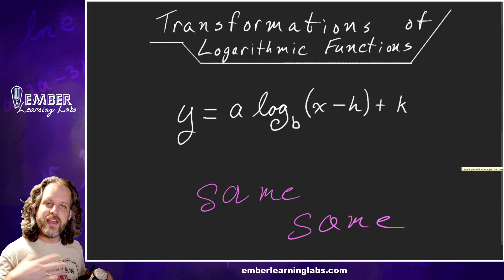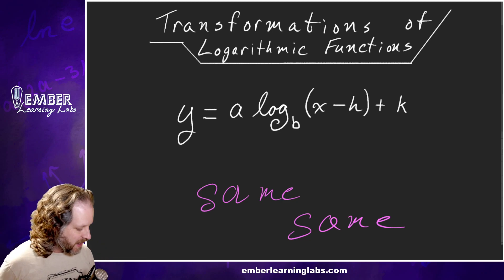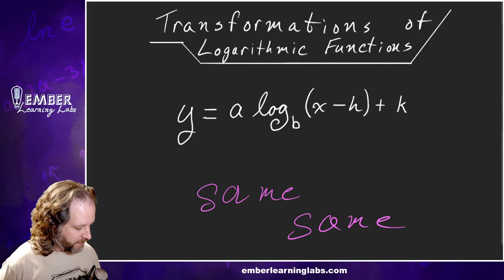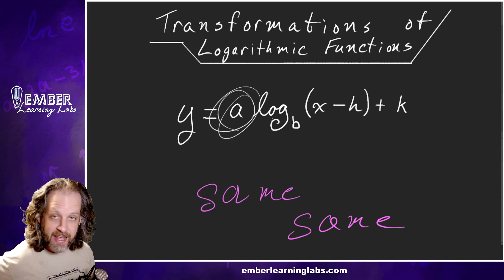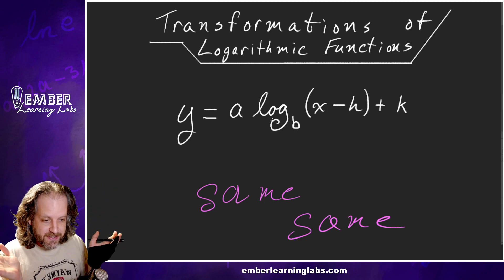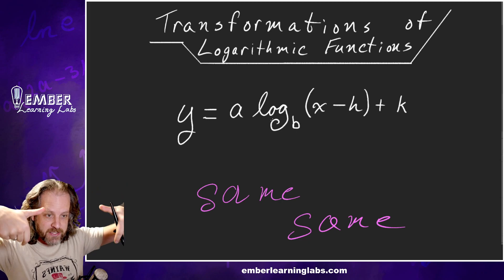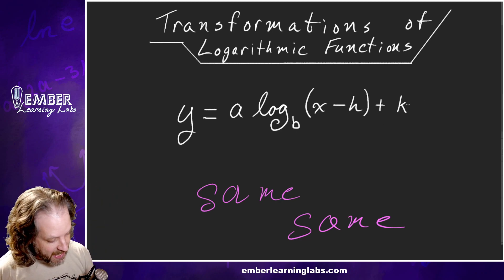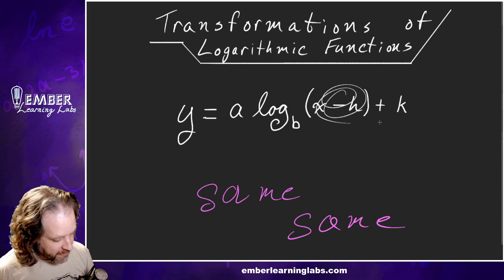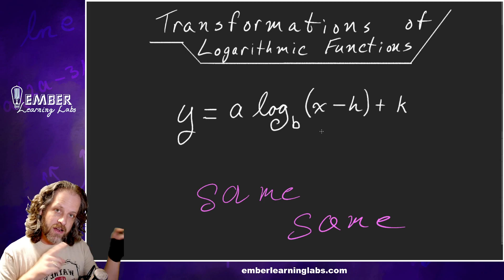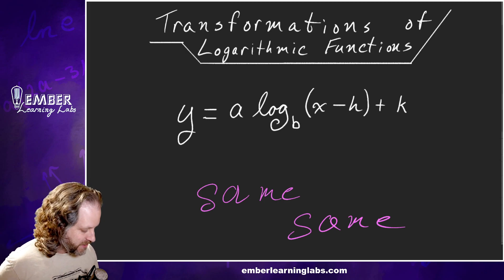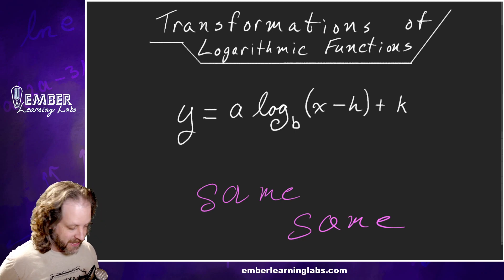Now transformations — and it's the same stuff we've seen before. The a value is a dilation: greater than one stretches vertically, between zero and one compresses, negative flips it over. The k outside the parentheses shifts up and down. The h, because of that negative, is a horizontal shift and moves opposite — just like we've always done.